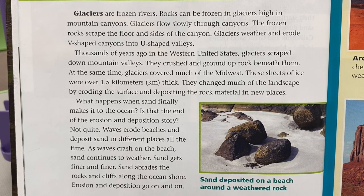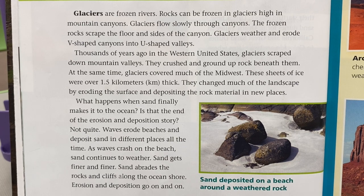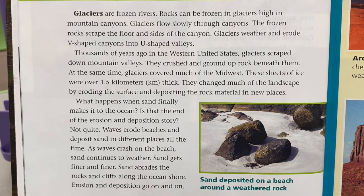What happens when sand finally makes it to the ocean? Is that the end of the erosion and deposition story? Not quite. Waves erode beaches and deposit sand in different places all the time. As waves crash on the beach, sand continues to weather, getting finer and finer. Sand abrades the rocks and cliffs along the ocean shore. Erosion and deposition go on and on.